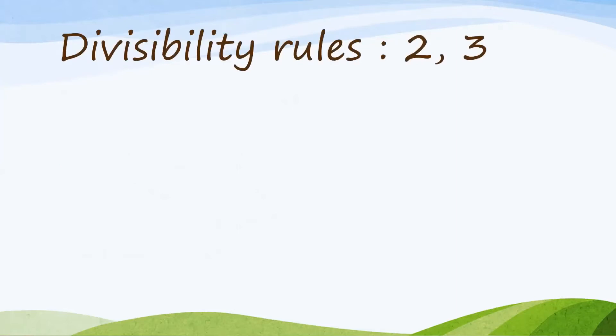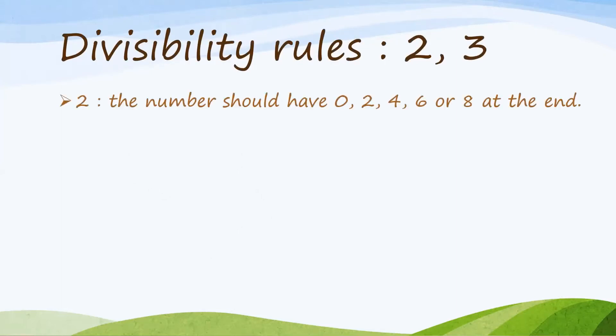Divisibility Rules of 2 and 3. The Divisibility Rule of 2 is that the number should have 0, 2, 4, 6, or 8 at the end.